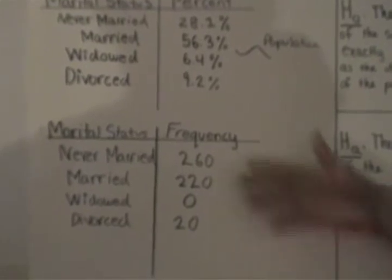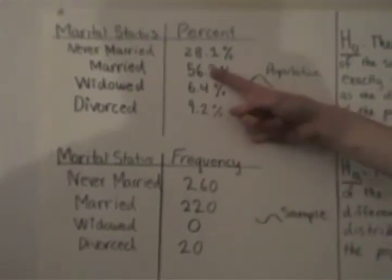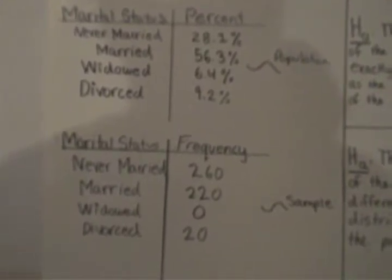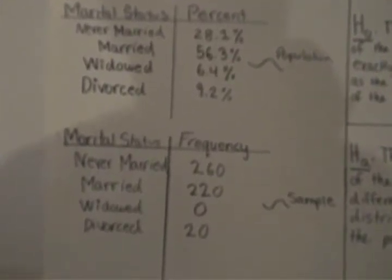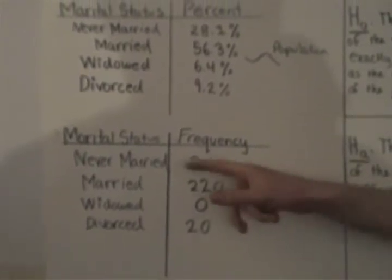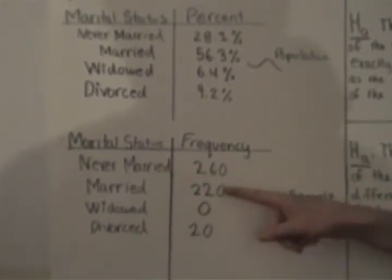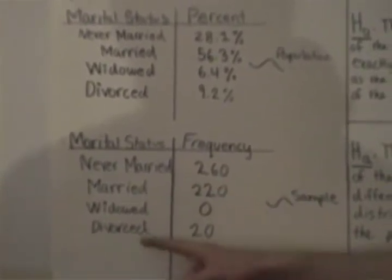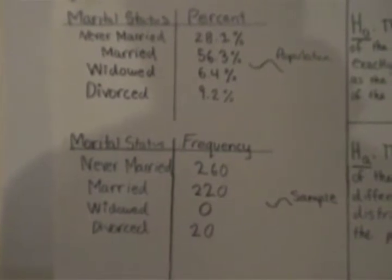And then the problem gives us the frequency for the sample of 500 that were taken. So we want to compare this to this in our HA hypothesis. So right here, there was 260 out of the 500 that were never married, 220 out of the 500 that were married, 0 out of the 500 that were widowed, and 20 out of the 500 that were divorced.